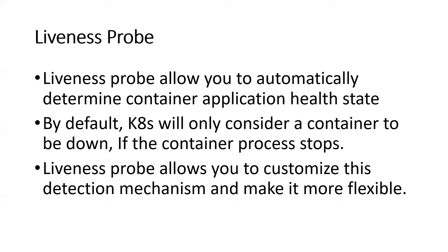We define what the application should serve — a specific status or content. When we specify a status, it checks the response code. If it's between 200 and 399, that's a healthy state for any HTTP application, and it confirms the application is up and running. These kinds of flexible checks can be done with the liveness probe, and you can define your own checks. That is one of the key advantages of the liveness probe.